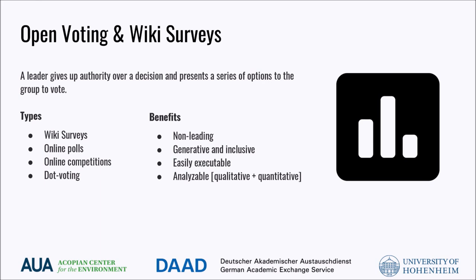Democratic decision-making takes place when a leader gives up authority over a decision and presents a series of options to the group to vote on. The option accepted by the majority is then enacted. Democratic decision-making can be done using different open voting practices and instruments, including wiki surveys. Wiki surveys enable participants to add statements to others' responses — those statements are added to a poll and randomly presented back for individual participants to respond or rank. Over time, participants generate new ideas and build a picture of where consensus or disagreement lies. While regular surveys can limit insights to topics prescribed by researchers, wiki surveys are more fluid and democratic, allowing participants to add their questions or statements, which can help identify issues that may have been outside the researcher's view.